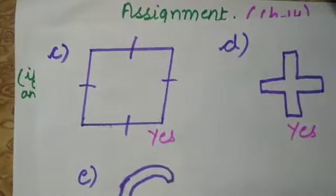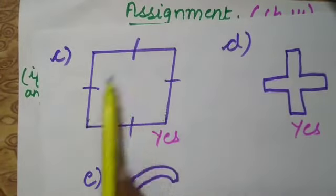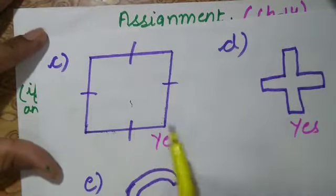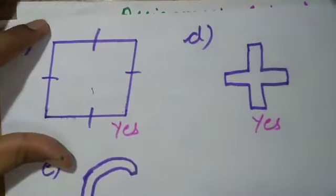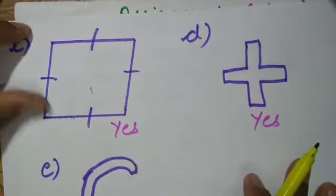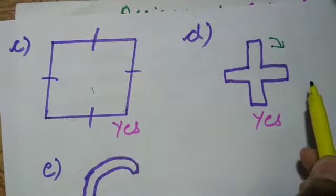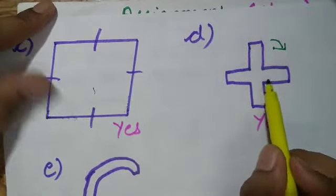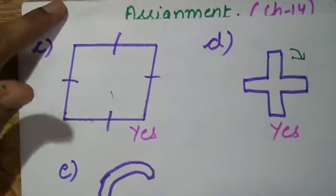Come to part C — a rhombus is given. As we have learned in the chapter, a rhombus has rotational symmetry of order 2 and its angle of rotation is 180 degrees. So this figure has rotational symmetry of order more than 1. Come to part D. If I start rotating in the clockwise direction, I find that at 90, 180, 270, and 360 degrees I get the same shape as the original. So this figure has rotational symmetry of order 4.